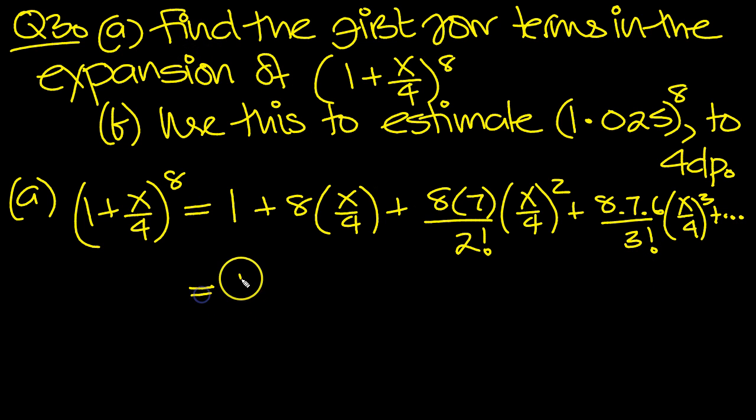So what have we got here? We've got 1, 8 over 4 is 2, so that's 2x. We've got a 4 squared, so one of the 4s. So if I cross this out and put a 16, then this will go into this and that will leave 2. So we've got 7x squared over 4 plus.